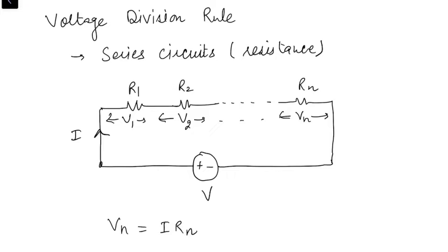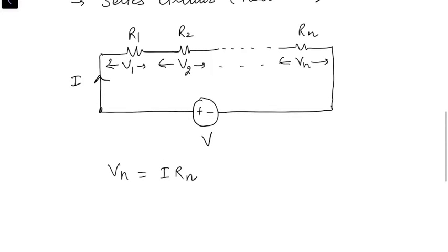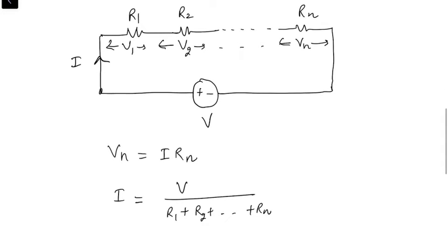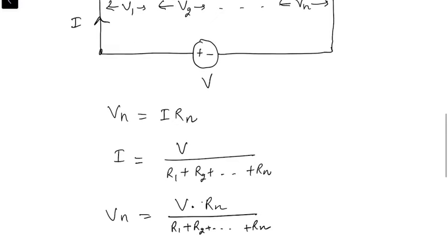Vn will be equal to I multiplied by Rn, where I is the current in the series circuit. The current I equals V divided by the sum R1 plus R2 up to Rn. Therefore, Vn equals V multiplied by Rn, divided by R1 plus R2 up to Rn. So the voltage division rule states that the voltage across any resistance equals the source voltage multiplied by that resistance's value, divided by the sum of all resistances connected in series.